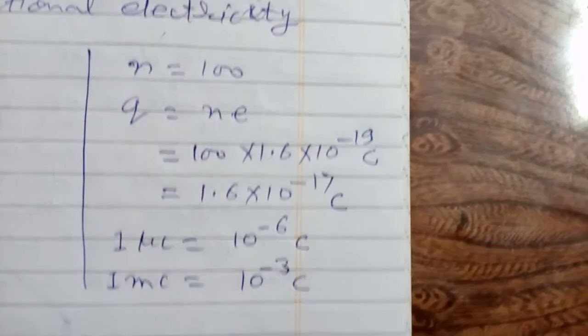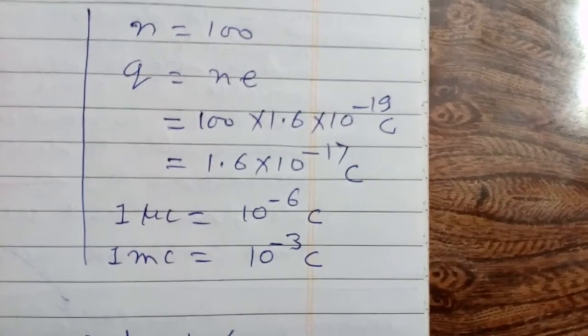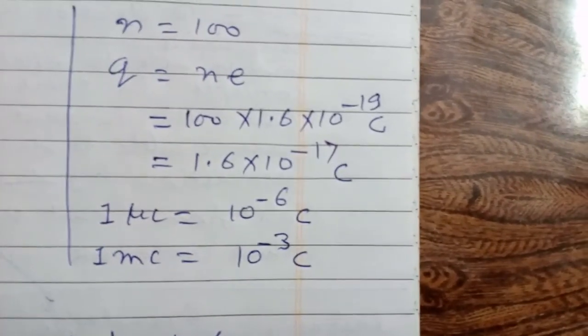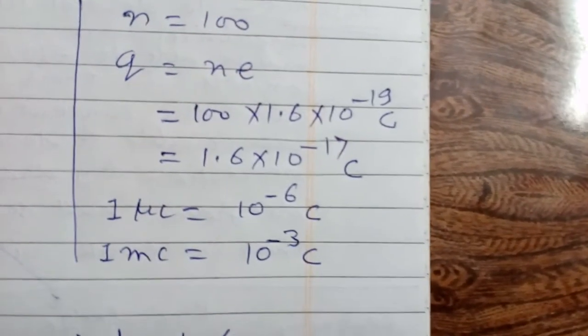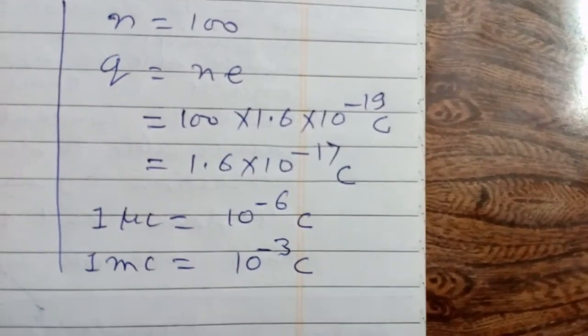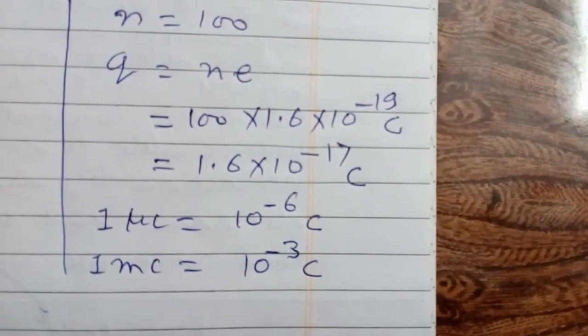Now suppose one body loses 100 electrons. Then positive charge gained by the body q is equal to n times e. This is equal to 100 into 1.6 into 10 to the power minus 19 C, and it is equal to 1.6 into 10 to the power minus 17 C.